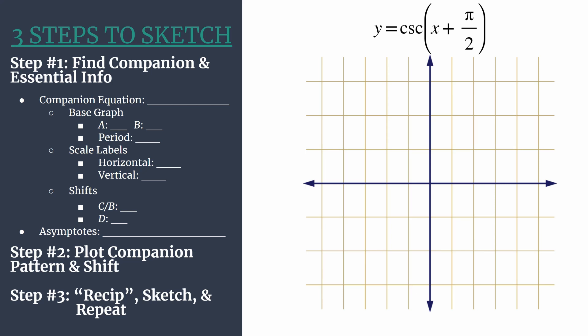We know that sine will be the companion equation for cosecant because they're reciprocals. Note that our equation is in the general form for shifted cosecant graphs, y equals a cosecant of bx minus c plus d. So our companion equation is going to be basically our equation, but just replace the cosecant with sine. So it's going to be y equals sine of x plus pi over 2.